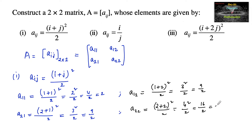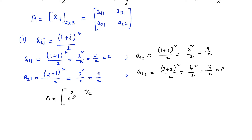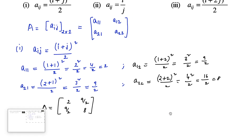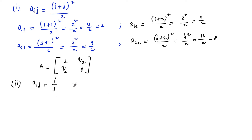16 upon 2 is 8. So therefore for the first case, the matrix A is equal to [2, 9/2; 9/2, 8]. Now let's go with the second one, where the element of the matrix is given as i upon j.